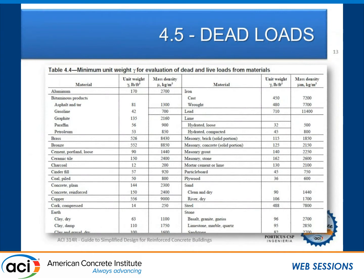Another beautiful thing about this guide is that since it's self-contained, it has pages and pages of loads and weights for different materials — not only for all kinds of materials like bronze, brass, wood, iron, and mortar, but also for composite assemblies like CMU walls with some cells grouted. If your reinforcement is at 32 inches, this is the weight; if at 16 inches, depending on whether it's 4, 6, 8, or 10 inches — it has full data of weights. It has about 8 pages of dead loads.